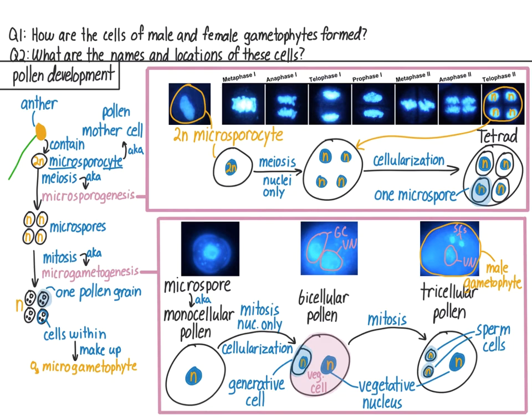So we can see how the replication of nuclei and the subsequent cellularization of those nuclei produces the microspores within the tetrad, and also produces the two sperm cells found within the vegetative cell.